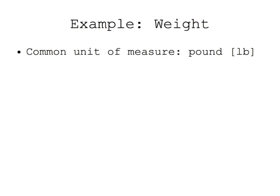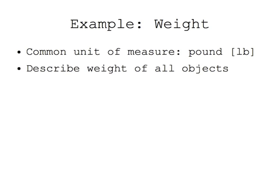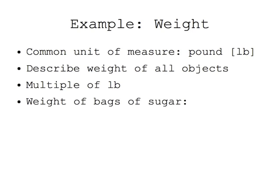For example, a unit of measure for weight is the pound. It is possible to describe how much weight any object around you has by using a multiple of the pound. The weight of this bag of sugar is 5 pounds. The weight of this bag of sugar is 10 pounds. The weight of this bag of sugar is 20 pounds.